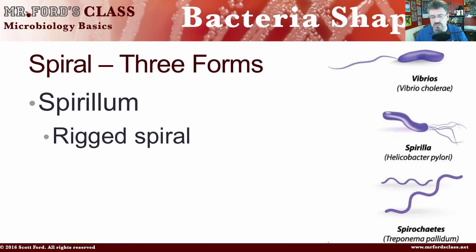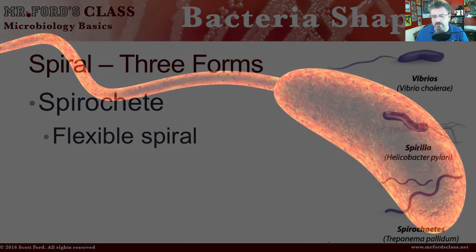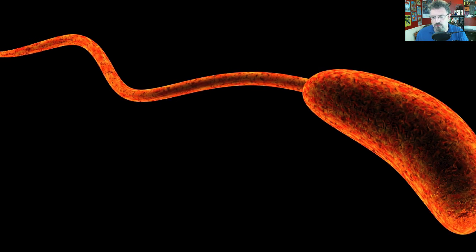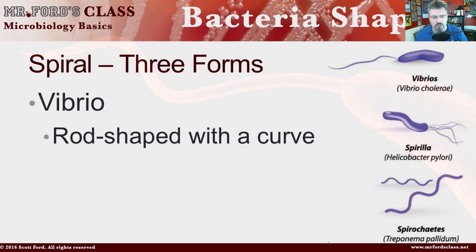Then we have spirilli. Spirilli have three forms of their own. There's the spirillum, which is a rigid spiral. Then the spirochete, which is a flexible spiral. And then the vibrio, which is rod-shaped with a curve.